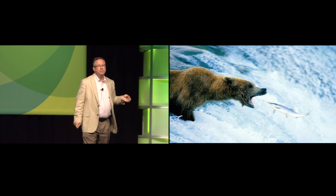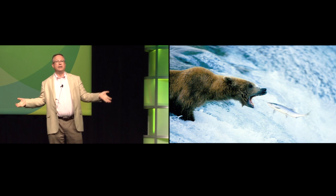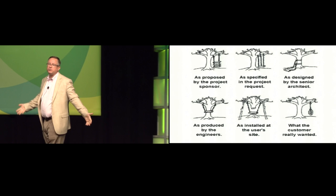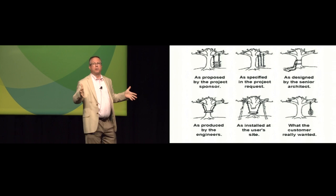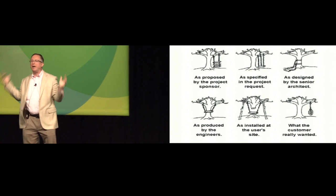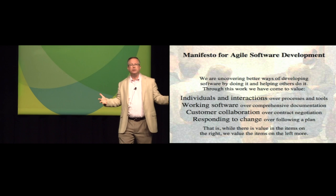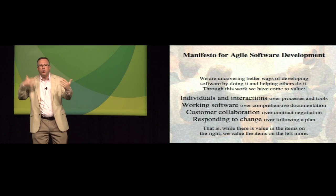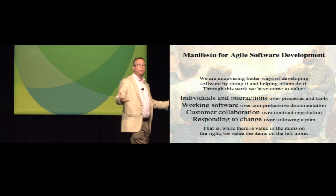This is actually a real problem, because in the real world, things do change. Requirements change. Our customers change. The market changes. So about ten years ago, a group of software developers got together and said, can't we come up with a better way to develop software to deal with this kind of change? And they launched something called the Manifesto for Agile Software Development, which is all about taking a more collaborative and iterative approach to bringing software to life.